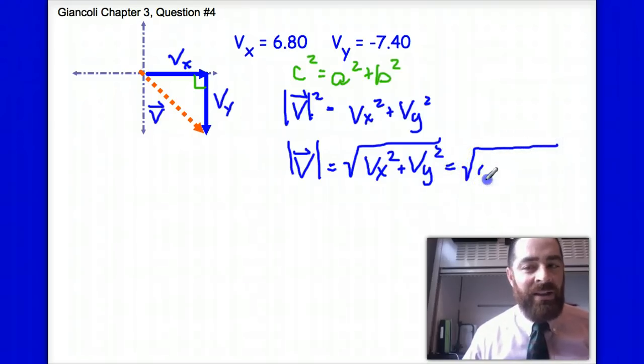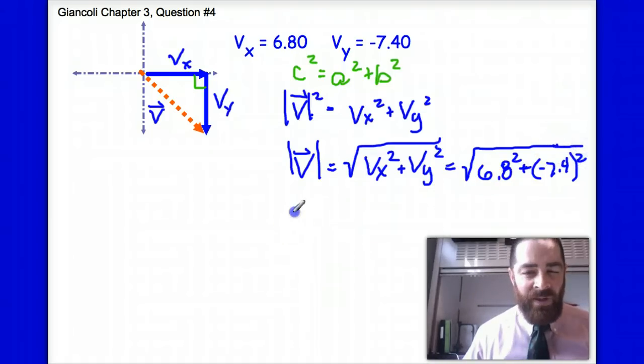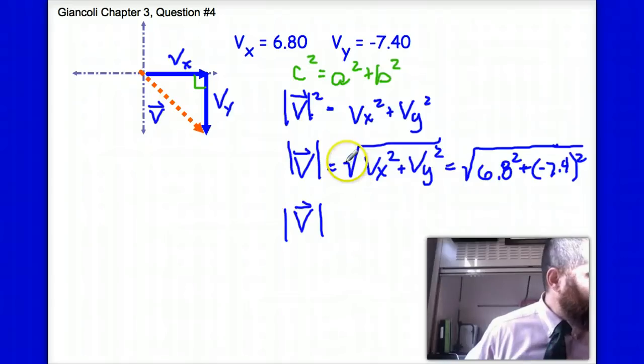And then finally, when I plug this in, I'm going to get the x component which is 6.8 squared, and I'm going to add to it negative 7.4 and I'm going to square it. That yields a magnitude of my velocity vector of exactly 10 units.